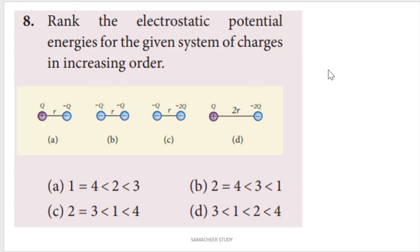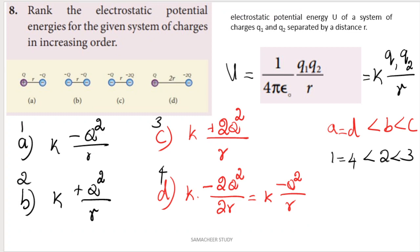Question number 8: Rank the electrostatic potential energies for the given system of charges in increasing order. The general formula is: electrostatic potential energy U equals 1 divided by 4 pi epsilon naught multiplied by Q1 into Q2 divided by r, where r is the distance between the two charges Q1 and Q2.